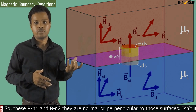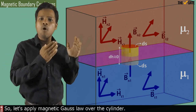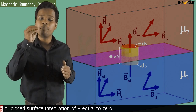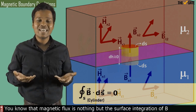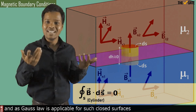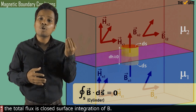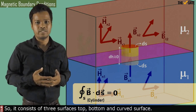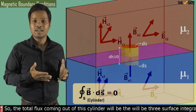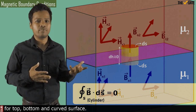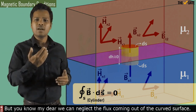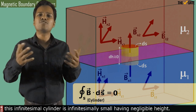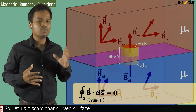Since the cylinder is infinitesimally small it is almost stuck to the boundary surface, so BN1 and BN2 are normal or perpendicular to those surfaces. Now let's apply Magnetic Gauss Law over the cylinder — the total magnetic flux coming out of this closed surface equals zero. The closed surface is a cylinder, so it consists of three surfaces: top, bottom, and curved surface. We can neglect the flux from the curved surface because the cylinder has negligible height.